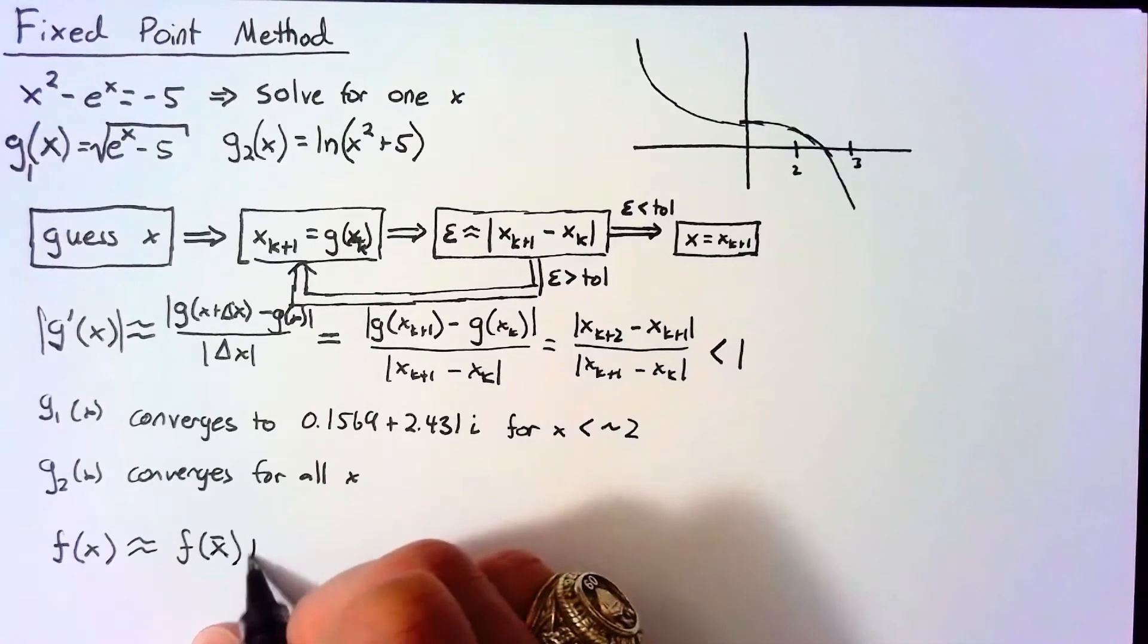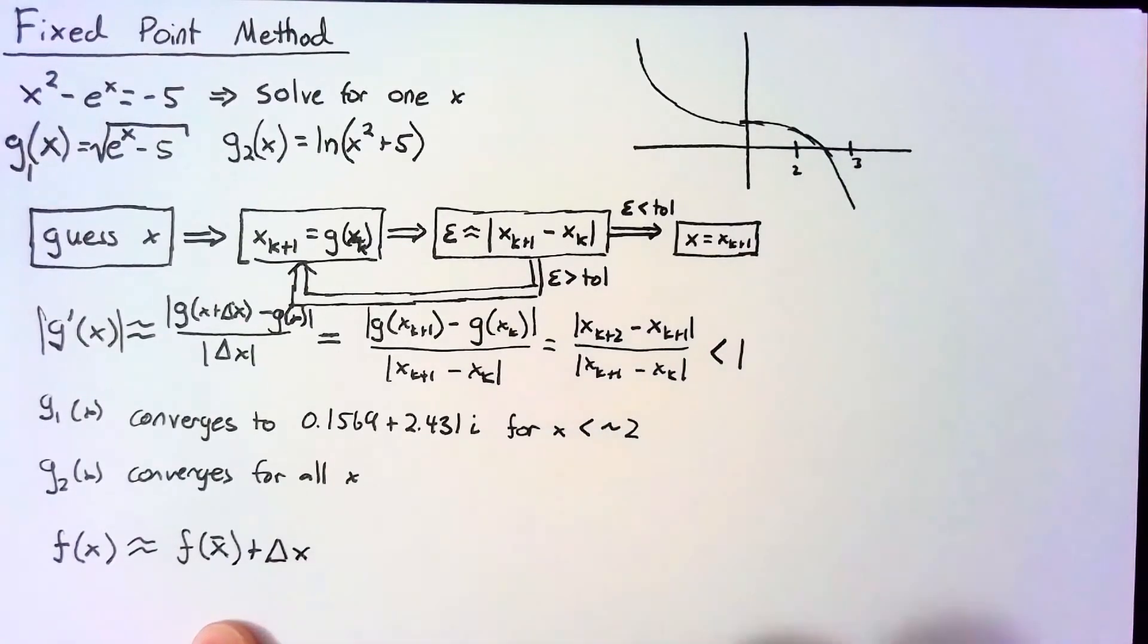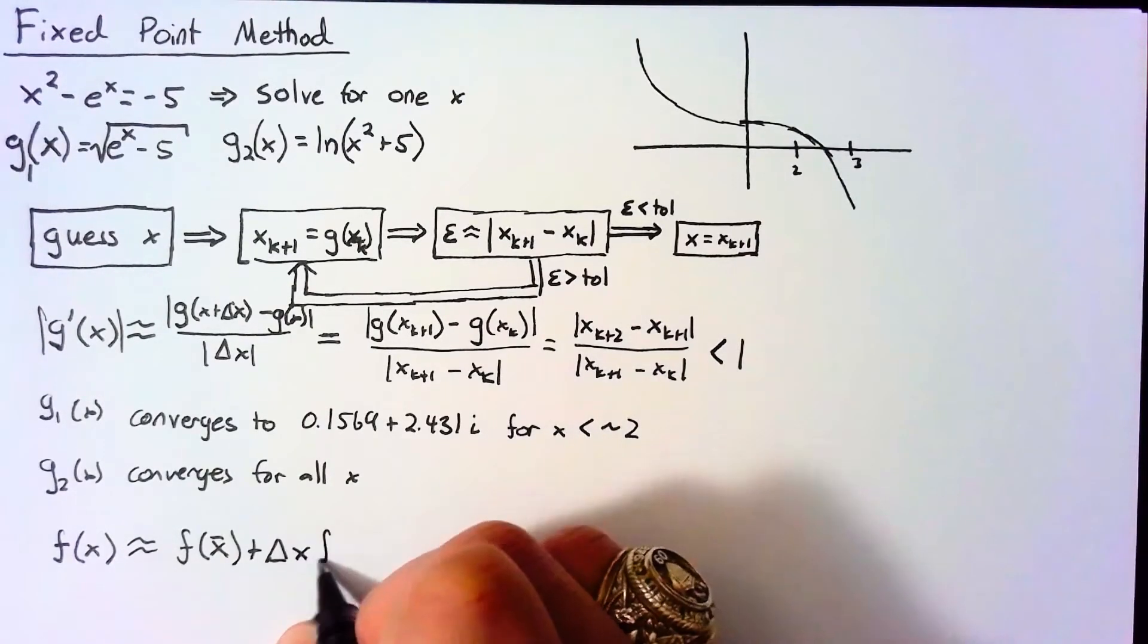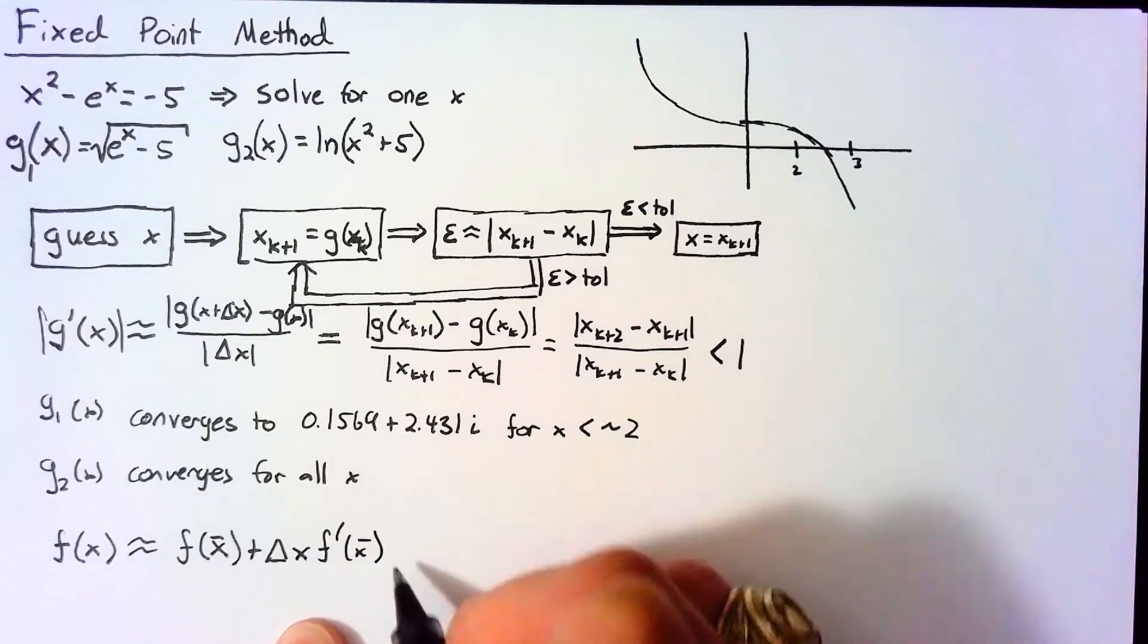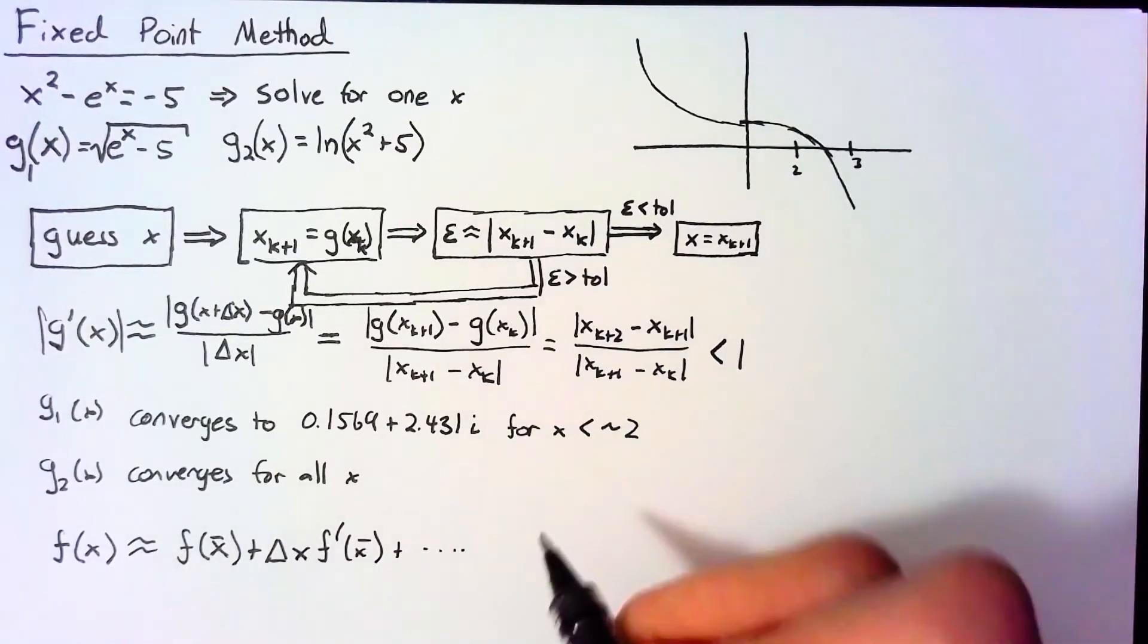So f(x) is approximately equal to f of some other x value. I'm going to call that x̄ just so we have a name for it. Plus Δx multiplied by f'(x̄) plus some other stuff that we're not going to worry about.